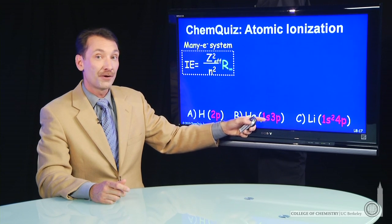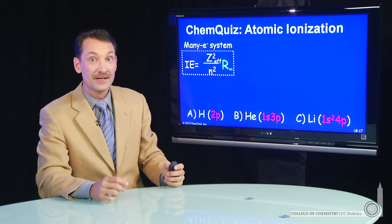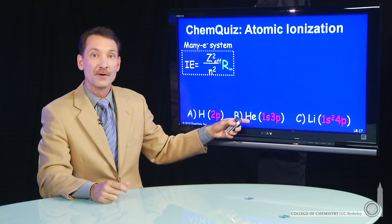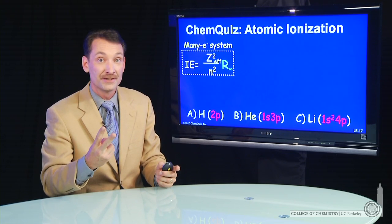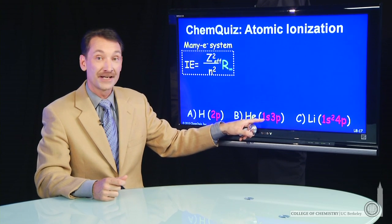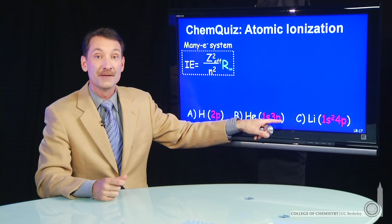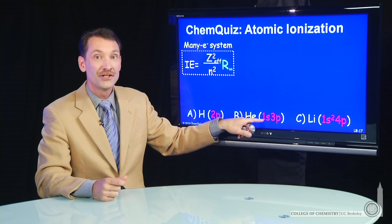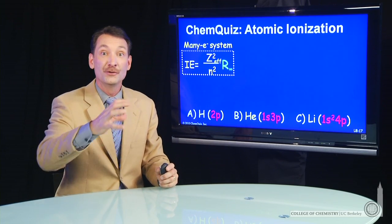When there's s electrons shielding p electrons, the shielding is very effective. So helium, with its two plus charges, has a 1s electron shielding an outer 3p. That 1s shields almost one full nuclear charge.